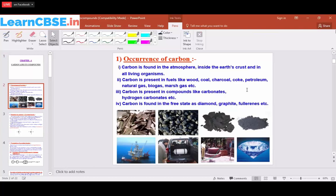Carbon is present in compounds such as carbonates and hydrogen carbonates. It is also found in free states such as diamond, graphite, and fullerenes. These diamond, graphite, and fullerenes are the allotropes of carbon.